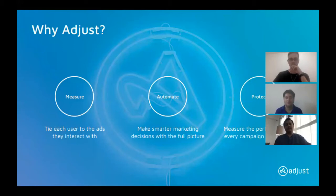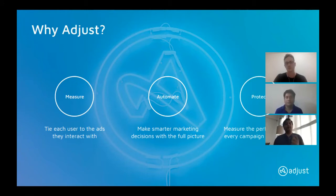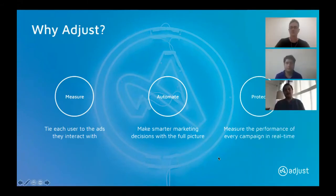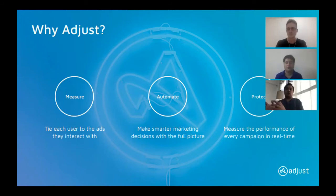What do we do? We have three product lines. First is Measure, where attribution comes into play. We help you understand which channel is outperforming for you — not only in terms of installs, but what is the post-install matrix: how many users you've acquired from channel X versus how much revenue you've received and what is the ROI. You can drill down from network to campaign level, to ad group or ad set level, to a creative, to a publisher level — understanding which channel gives more value.